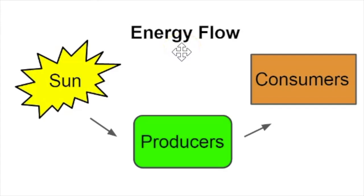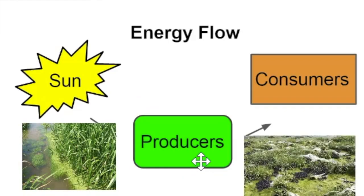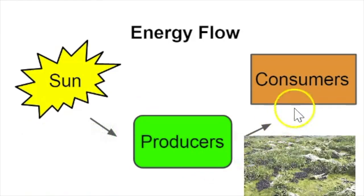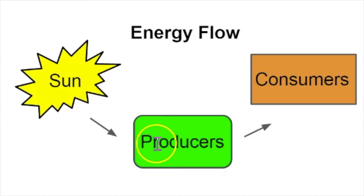The first thing we need to iron out is how energy flows from the sun and gets stored in the producers. The producers are the photosynthetic organisms such as plants or algae, and they literally start the food chain for the consumers, which is the basis of the entire ecosystem.